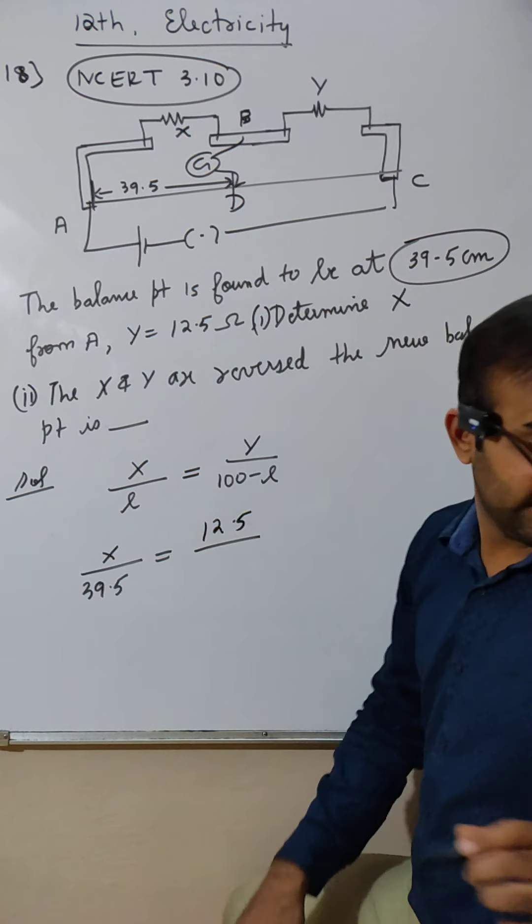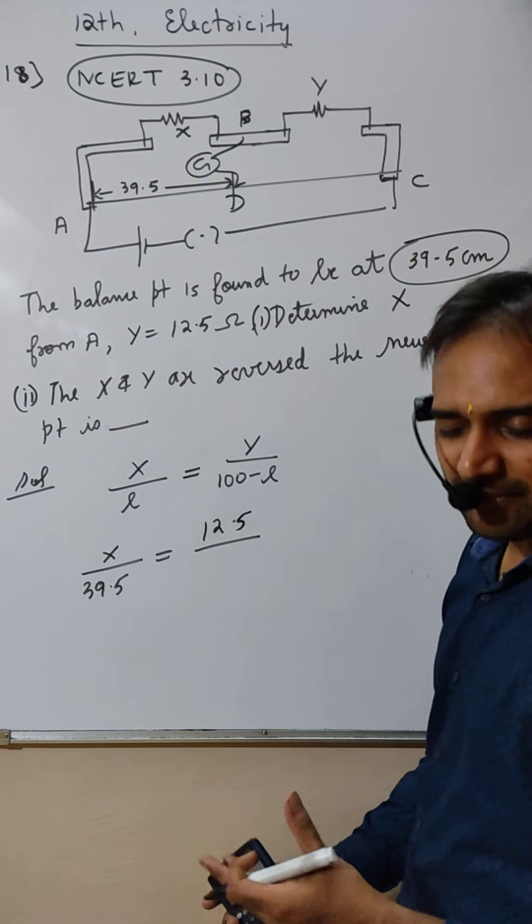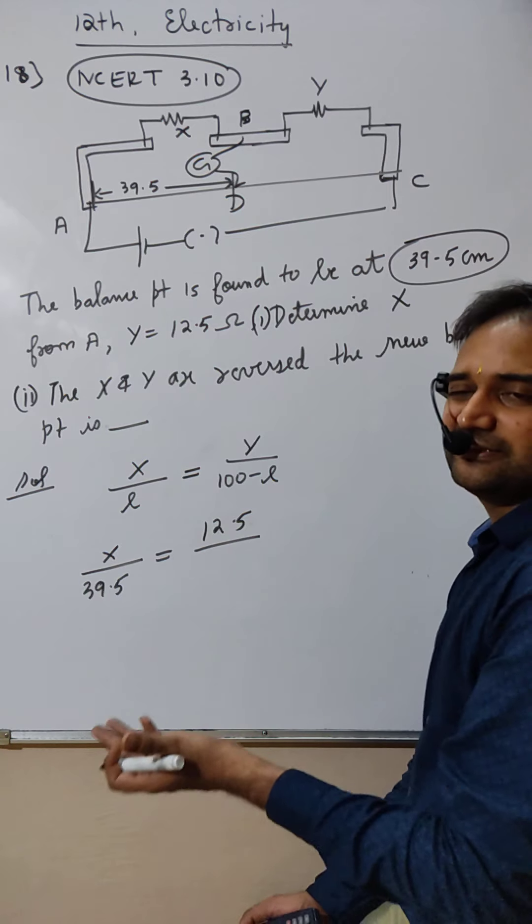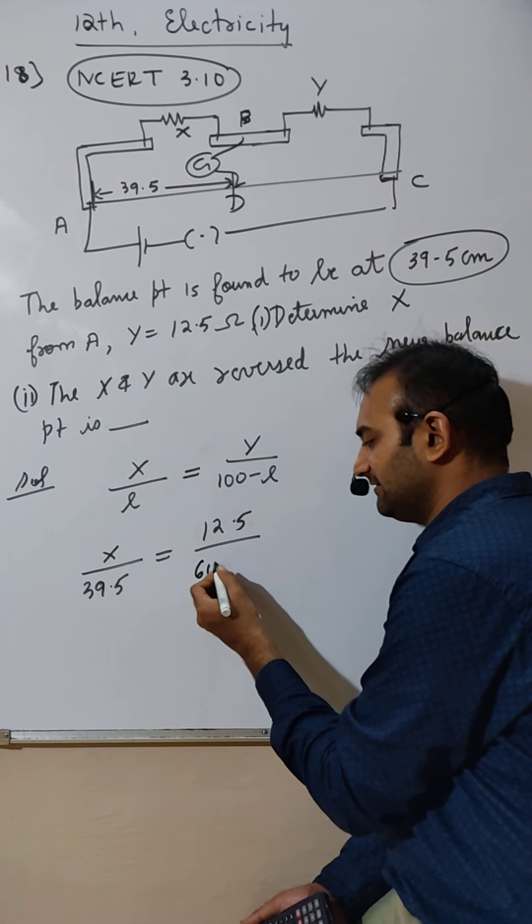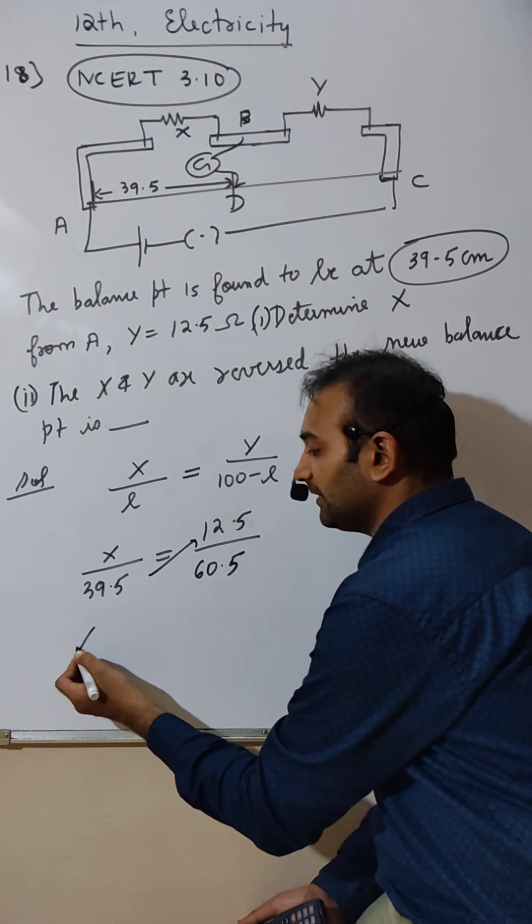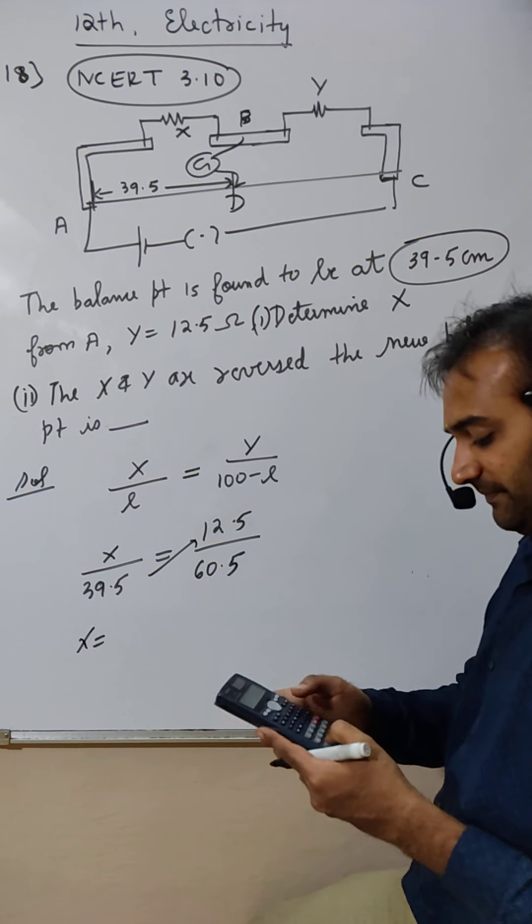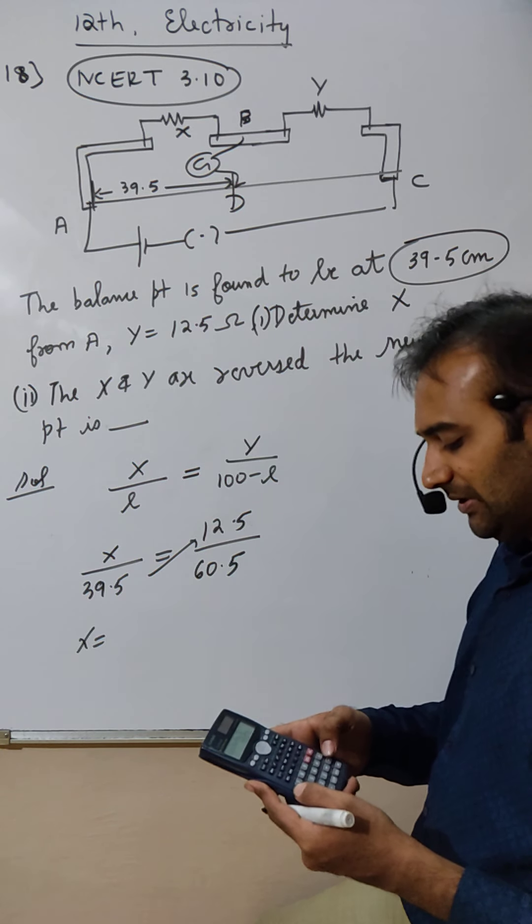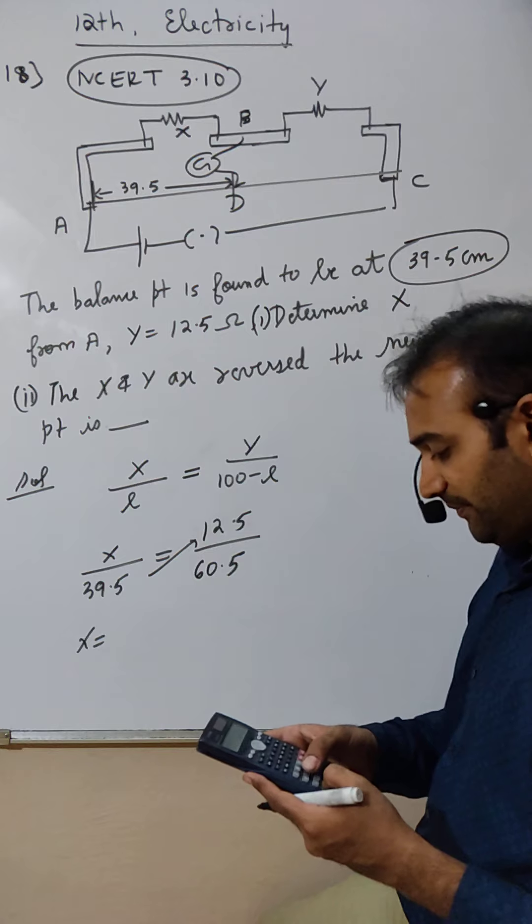100 minus L. This will go here. So X is 12.5 times 39.5 divided by 60.5.